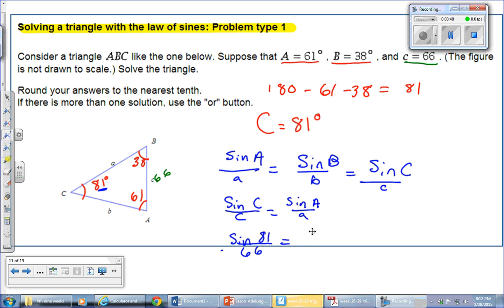is going to be equal to sine of 61 degrees, because that's the angle for A, divided by side A, which we don't know. We'll call it A.